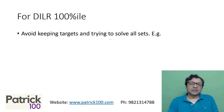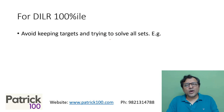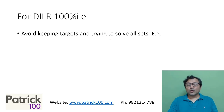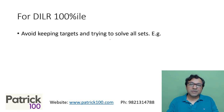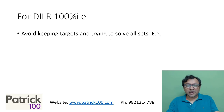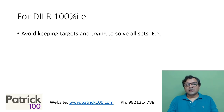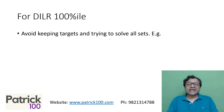So how do you get a DILR 100 percentile? Avoid keeping targets. When you focus on getting a hundred percentile, the biggest mistake people make is trying to keep targets and solve all the sets — which is not right because it creates additional stress.